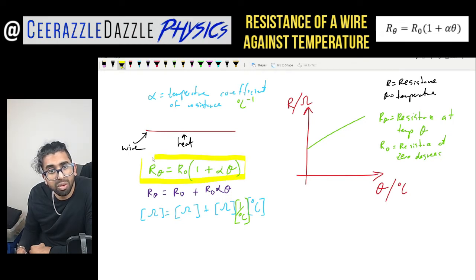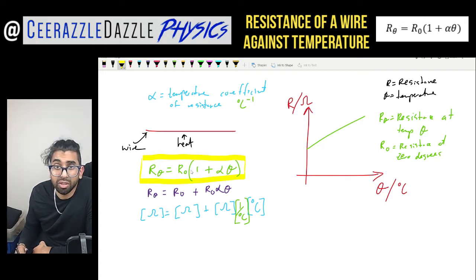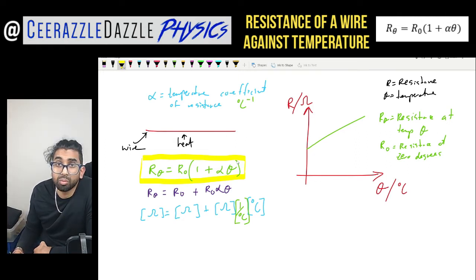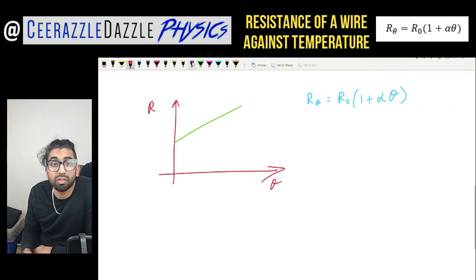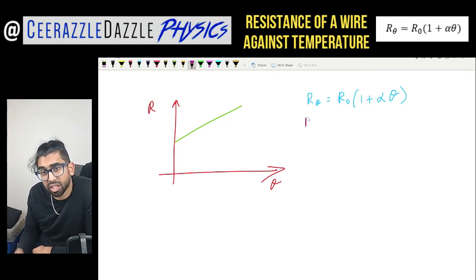Now, how can we work out α using a graphical method? We need to use the skill of relating the physics equation to the equation of a straight line — we've done this a couple of times already. We've got this graph and we're going to try to link the physics equation to y = mx + c in order to find the temperature coefficient of resistance α.